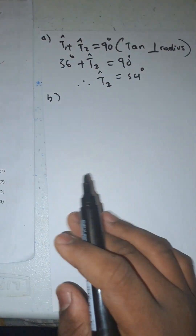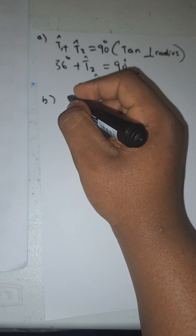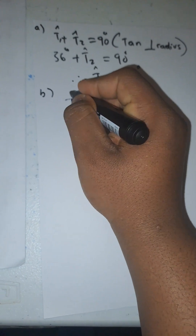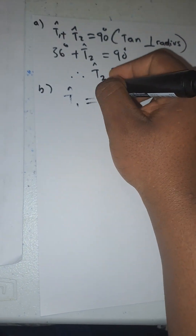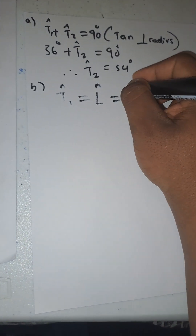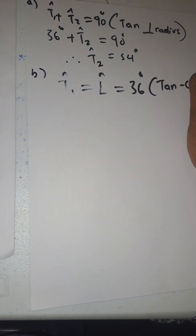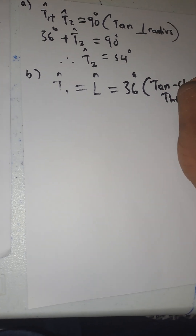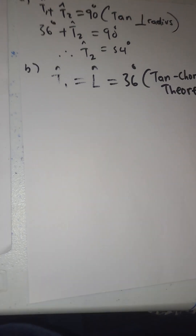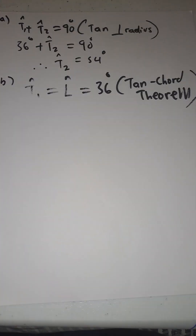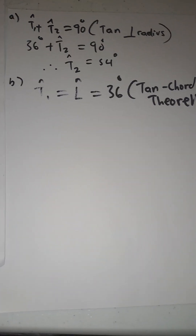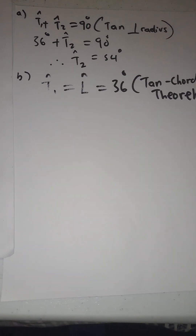Part b: they want angle L. I already found angle L equals 36 degrees. So: T1 equals L, which equals 36 degrees — reason: tan-chord theorem. Write the full theorem name — don't summarize or use shortcuts because you lose marks for that.